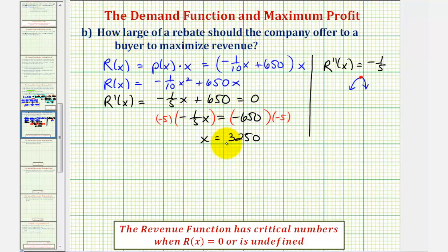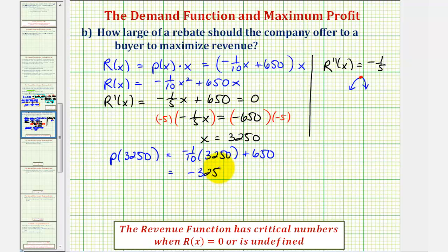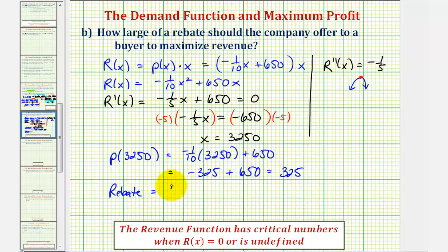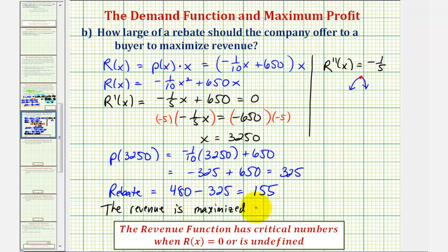To determine the rebate amount, we first find the price at this quantity: P of 3,250 equals negative one-tenth times 3,250 plus 650, which gives negative 325 plus 650, which is $325. The original price was $480, so the rebate amount equals the original price minus the price that maximizes revenue: $480 minus $325 equals $155. This means the revenue is maximized when the rebate is $155.